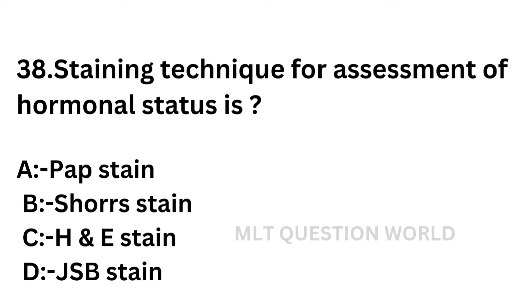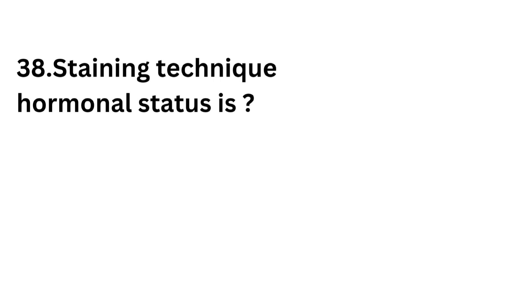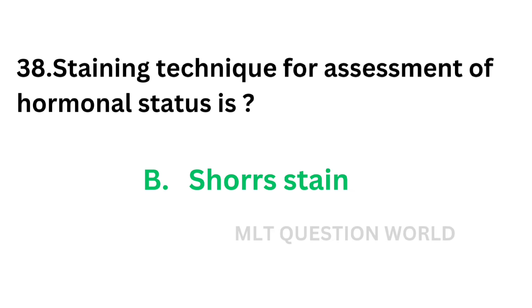Question number 38: Staining technique for assessment of hormonal status is — option A: Pap stain, option B: Shorr stain, option C: H and E stain, option D: Giemsa stain. The correct answer is option B, Shorr stain. The staining technique for assessment of hormonal status is Shorr stain.